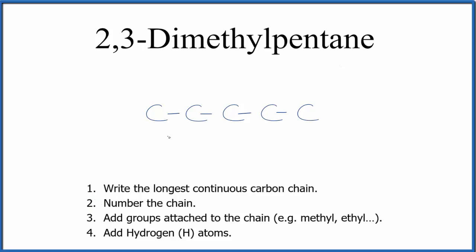Next, we're going to number the chain, one to five, and we're going to go from left to right. So we have our five carbons. Once we do that, we can add groups attached to this main chain here.